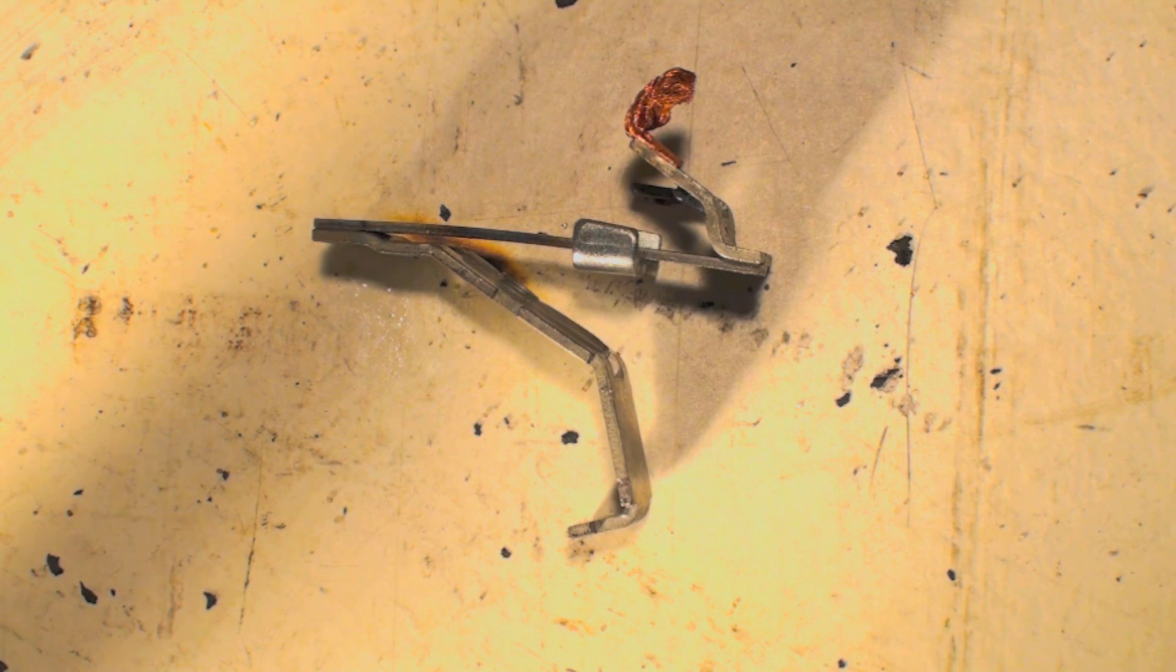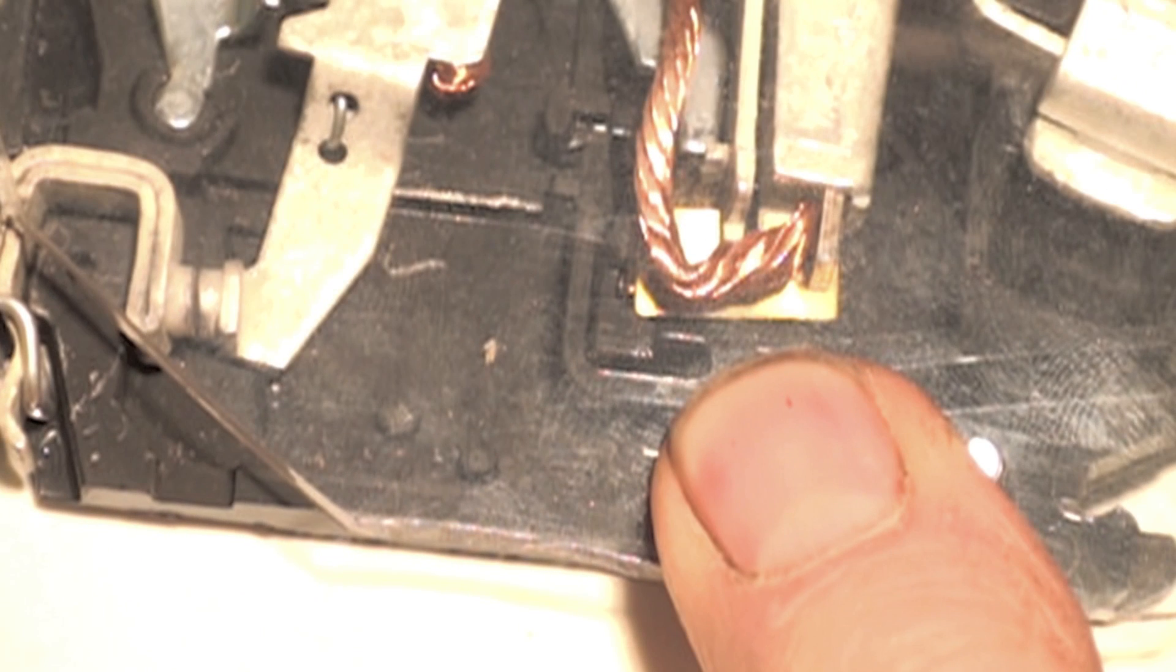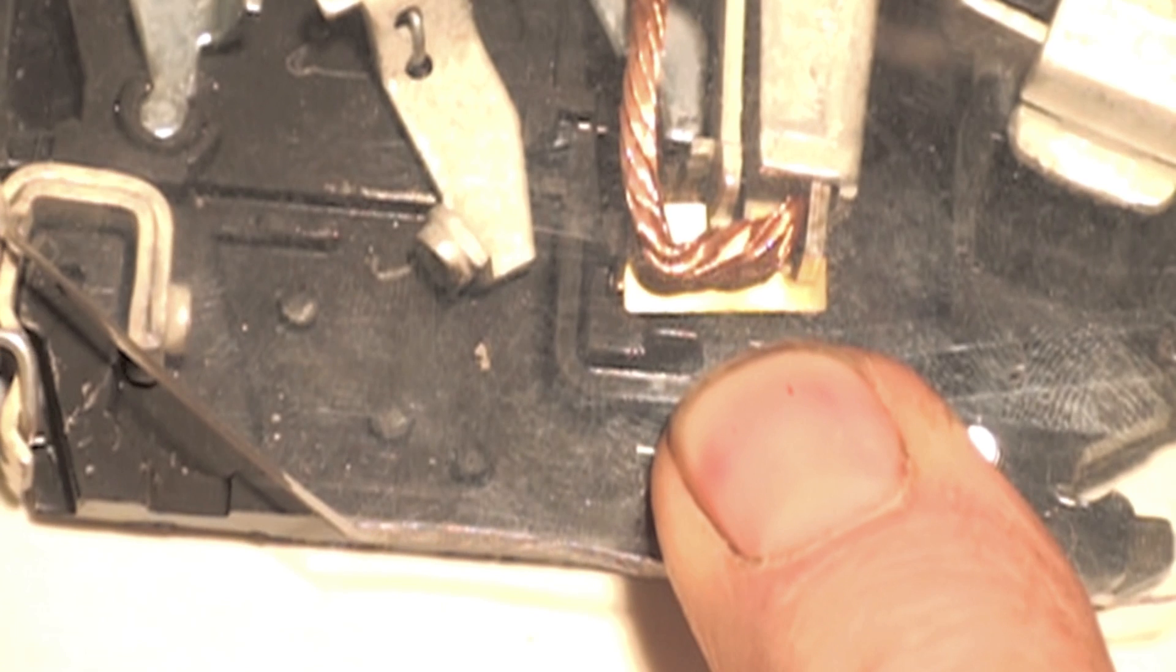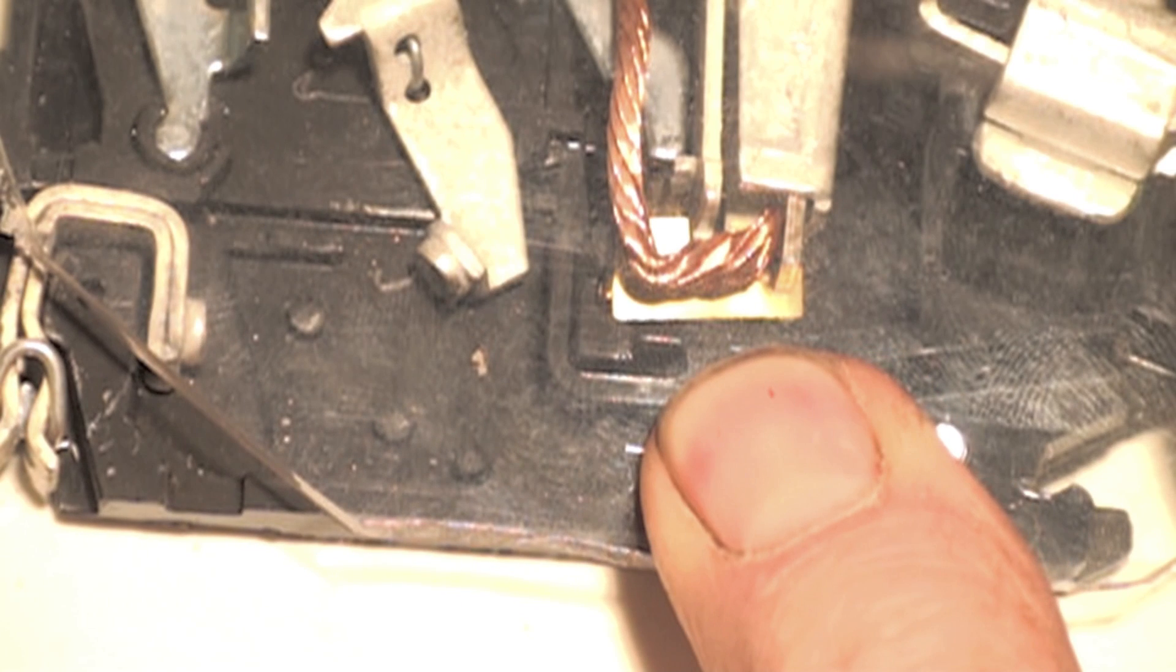And this is a slow-mo illustration of the contacts opening up. And that's the operation of the panel breaker.